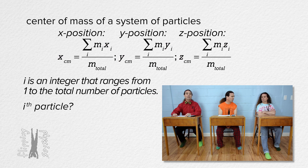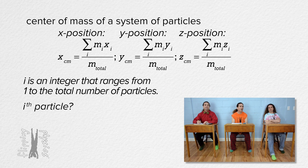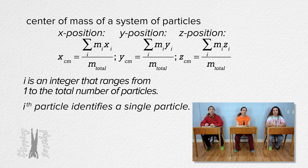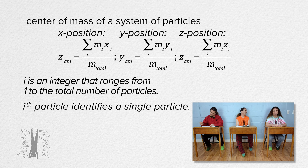What does i-th particle mean? That is just a fancy way of identifying a single particle in an unknown total number of particles. If there were eight total particles, we could refer to the fourth particle or the seventh particle or the eighth particle. However, because the total number of particles is unknown, we are just referring to a random particle as the i-th particle, because i ranges from 1 to the total number of particles in the system. Hence, i-th particle.